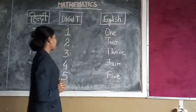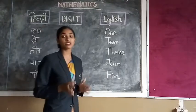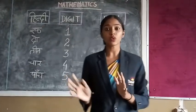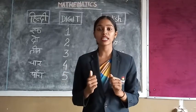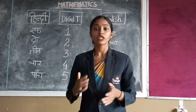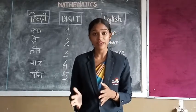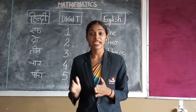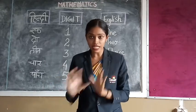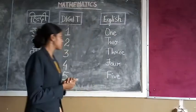So students, today we will study the numbers 1 to 10. Spelling and words we will see. So what are the numbers? 1, 2, 3, 4, 5, 6, 7, 8, 9, 10. So these are the 10 numbers. Every 10 numbers we will study.